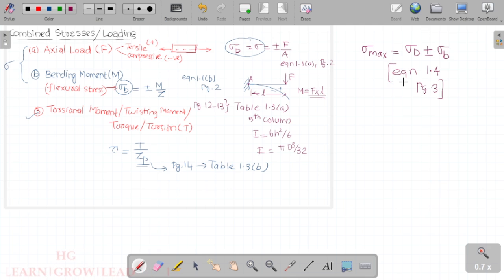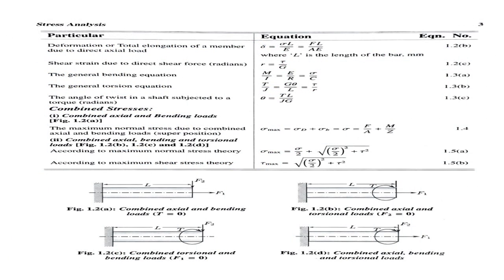If you have a problem, Equation 1.4 gives sigma_max = sigma_d ± sigma_b, where sigma_d is the axial or direct stress and sigma_b is the bending stress. The plus or minus sign depends on whether the bending stress adds to or subtracts from the direct stress at the point of interest.